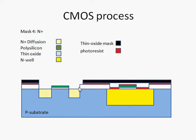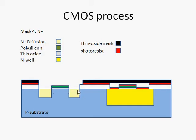Next, we implant the N-type dopants on the surface of the P-substrate and then drive these dopants into the P-substrate using a thermal drive-in. The result is an N-plus area as shown in the slide. You have an N-plus area here and an N-plus area here — one of which could be used as the source and the other as the drain. Source and drain active areas can be used interchangeably for this CMOS process.